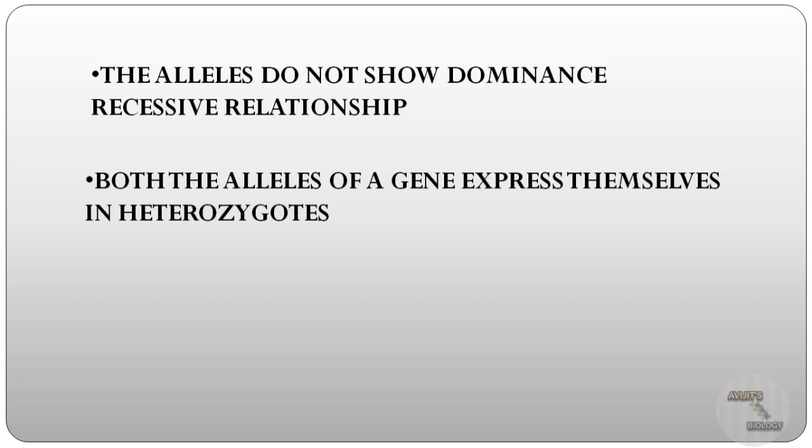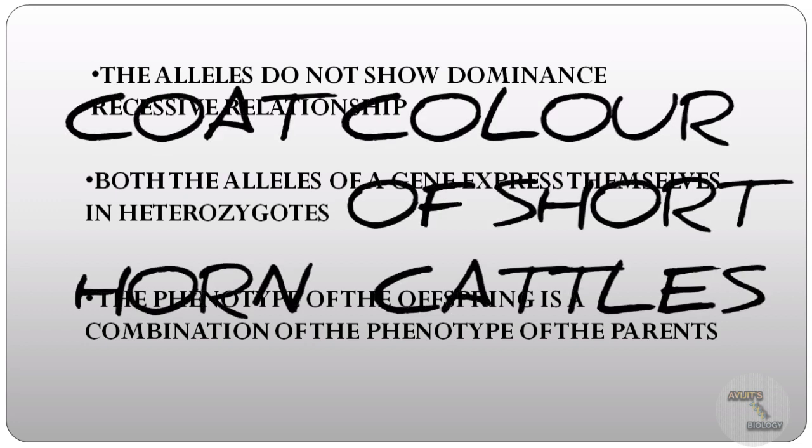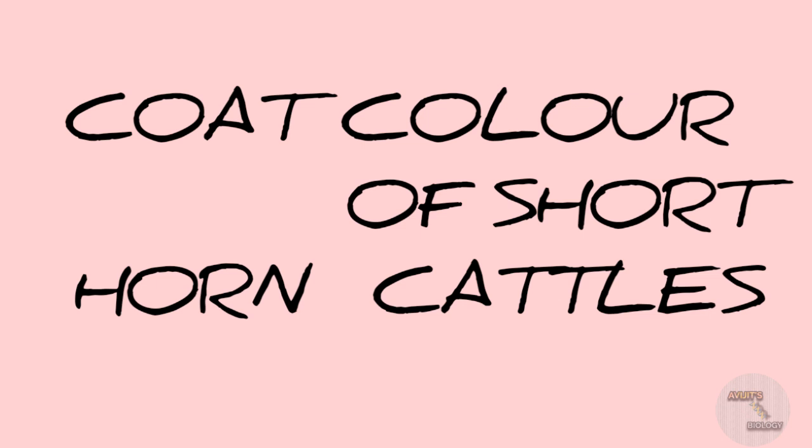Means the heterozygotes, the alleles are expressing together. Therefore the phenotype of the offspring will be the combination of the phenotypes of their parents. For example, the coat color of shorthorn cattle shows co-dominance.